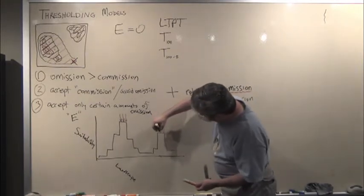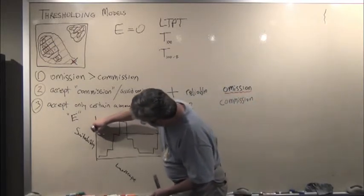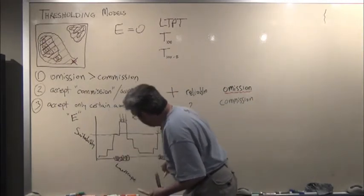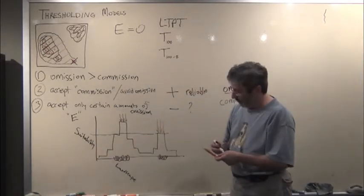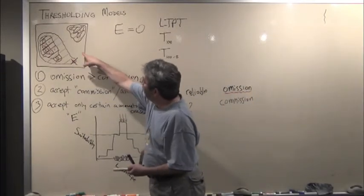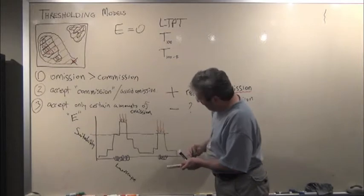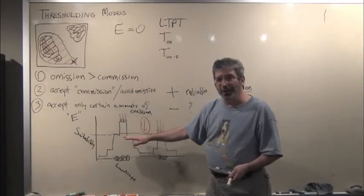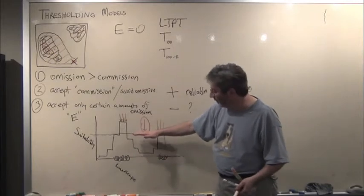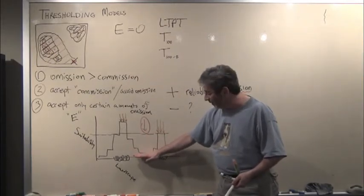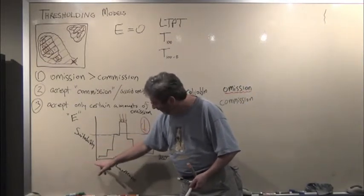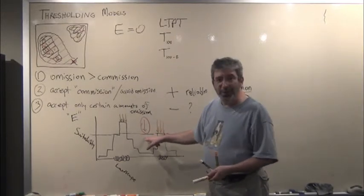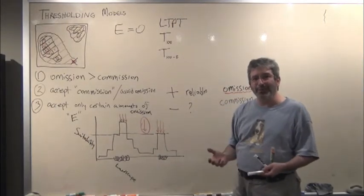We can say our T 100 approach is going to impose a threshold like that, and our predicted area of distribution is going to be something like this across our landscape. But imagine we have something that's just erroneous, this one. If we use a T 100 approach, or least training presence thresholding approach, that pushes our prediction down to here as far as a suitability threshold, and we then have to classify the whole region as being suitable.